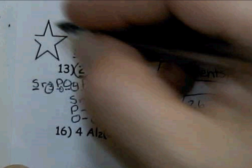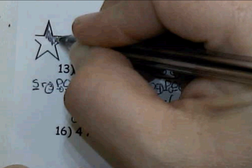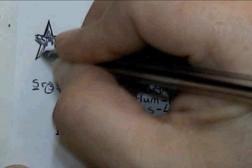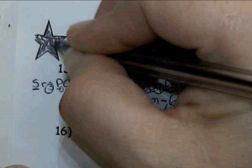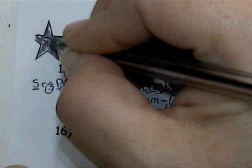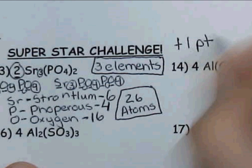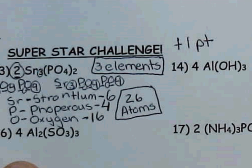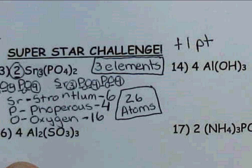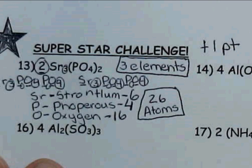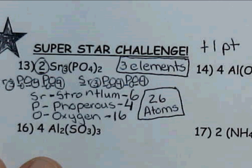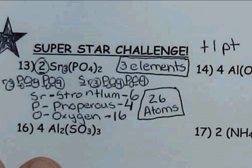These are superstar bonuses. Each one you get right, I will add one point to your hundred for your turned-in activity. Now you're going to go through and do numbers four through twelve for your homework. There was a video you should have watched along with this as well. Please email me if you have any questions. Thank you.